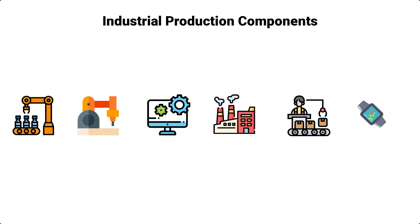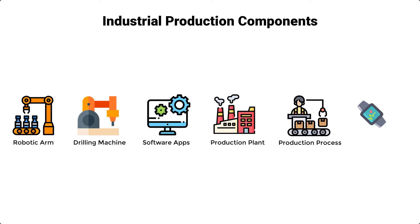As you might be aware, in industrial production there are many components involved in the value-generating manufacturing process, whereby a component could be anything ranging from physical elements such as a robotic arm or drilling machine, to software applications, the production plant itself, the production process, and also the actual product that is being manufactured. In the context of smart manufacturing, these are referred to as Industry 4.0 components.